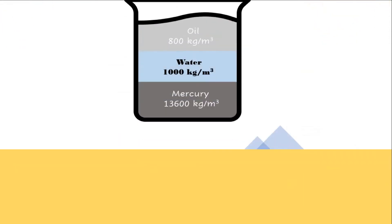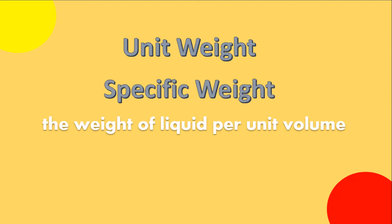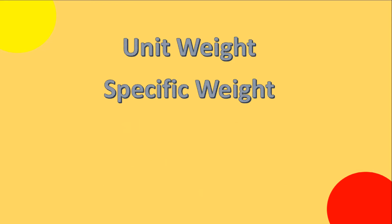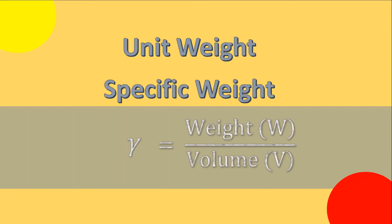Unit weight, or specific weight, is the weight of liquid per unit volume. The weight of a liquid is computed by multiplying its mass by gravitational acceleration — 9.81 m/s² for SI or 32.2 ft/s² for English. Unit weight is represented by the symbol gamma and computed using gamma equals the weight of the liquid over the volume of the liquid.